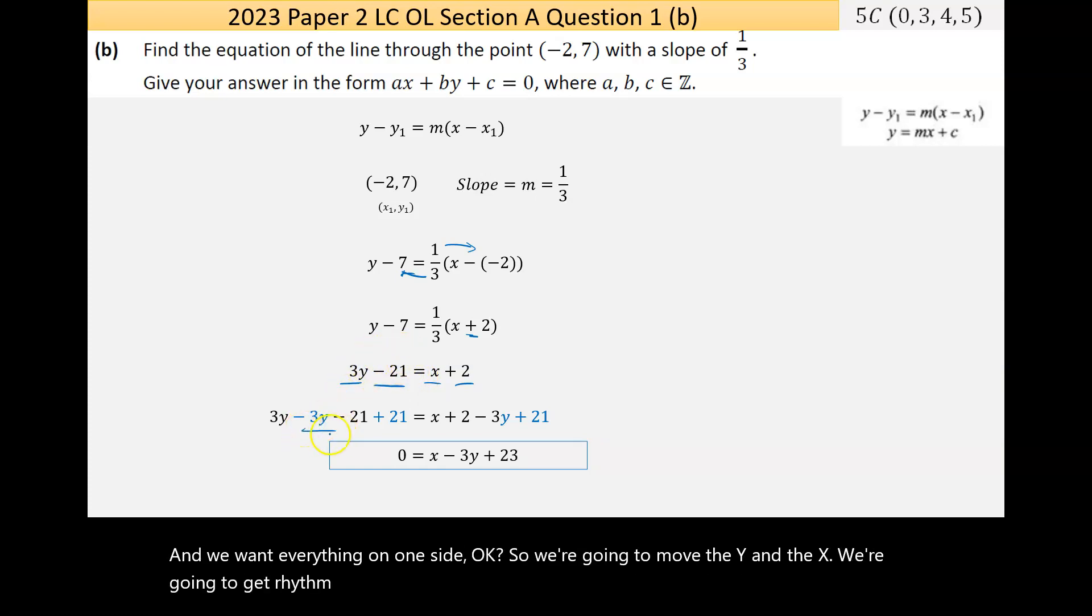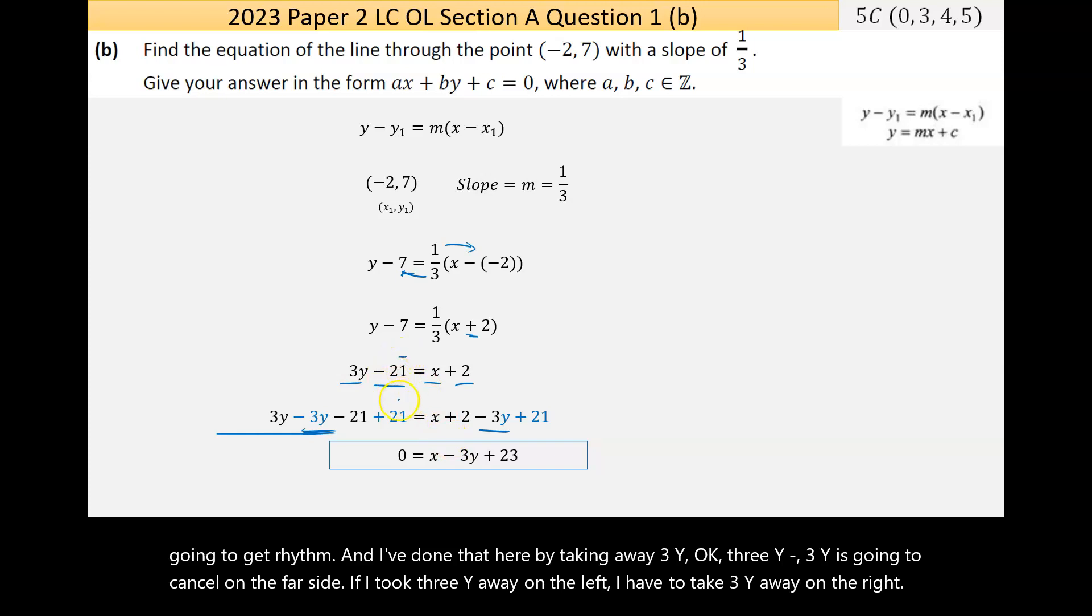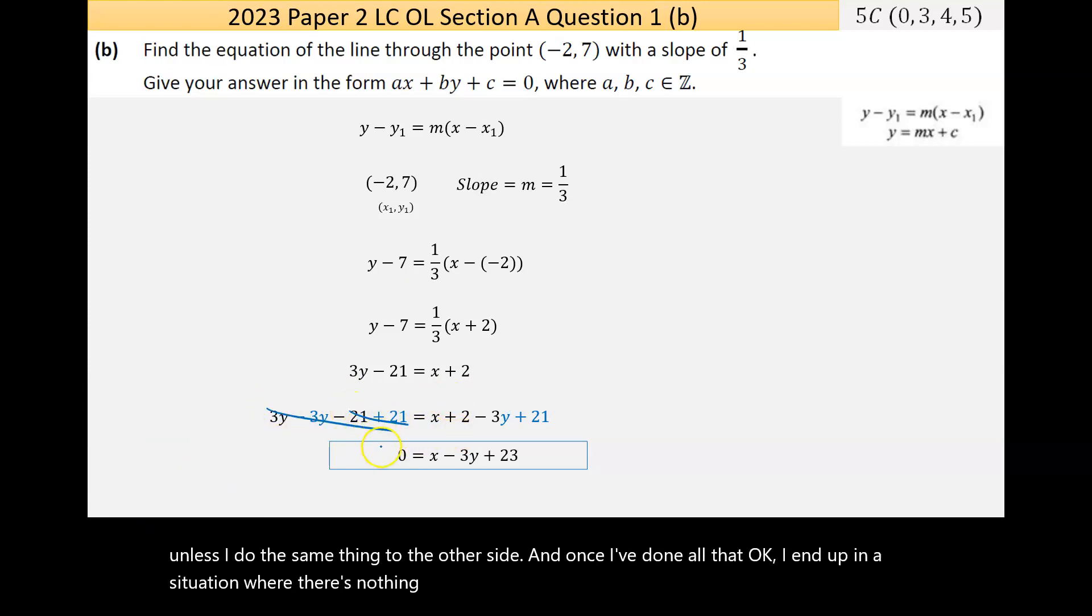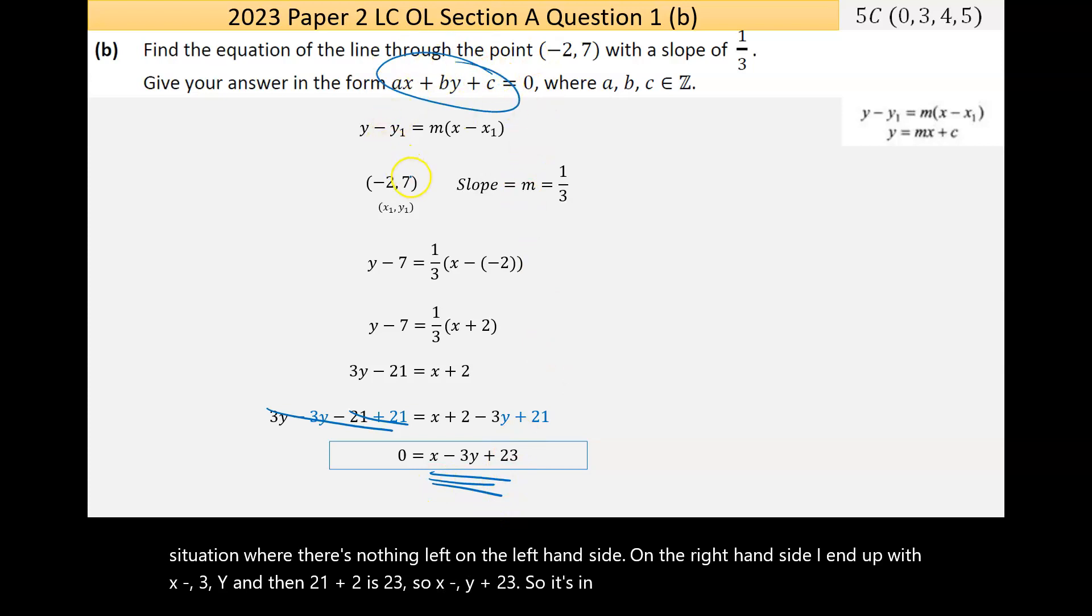We want everything on one side. I've done that here by taking away 3y - 3y minus 3y is going to cancel on the far side. I've also added 21. Once I've done all that, there's nothing left on the left-hand side. On the right-hand side, I end up with x minus 3y, and then 21 plus 2 is 23. So x minus 3y plus 23 - it's in the format that they wanted.